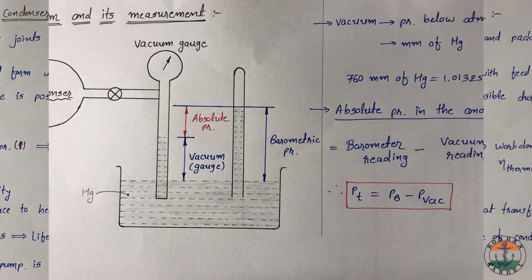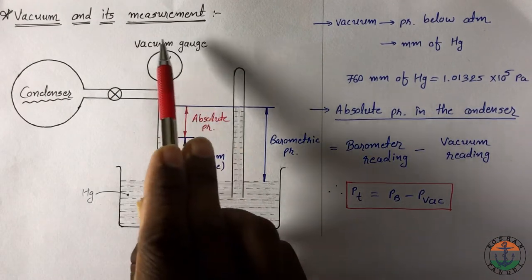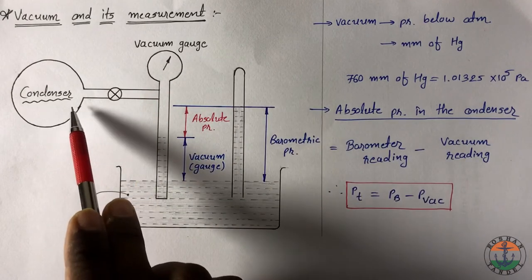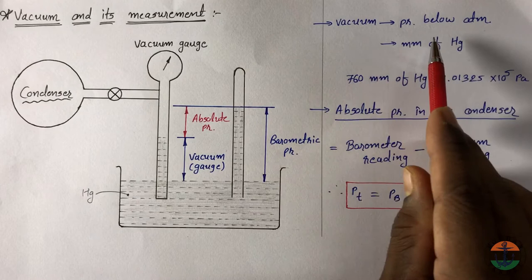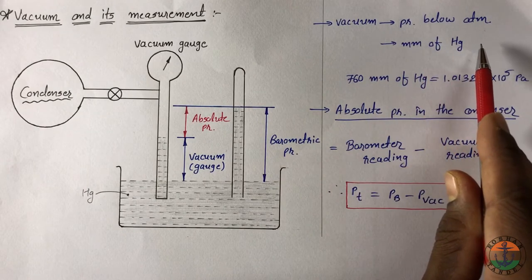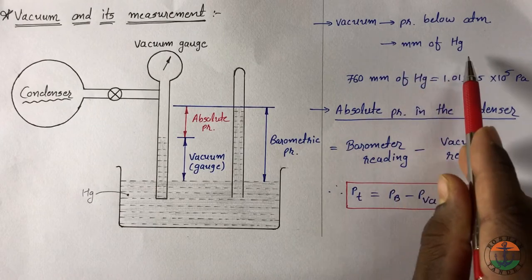Second topic is vacuum and its measurement. Here one vacuum gauge is attached to condenser. In case of condenser, vacuum means pressure below the atmospheric pressure. It is generally expressed in mm of mercury.